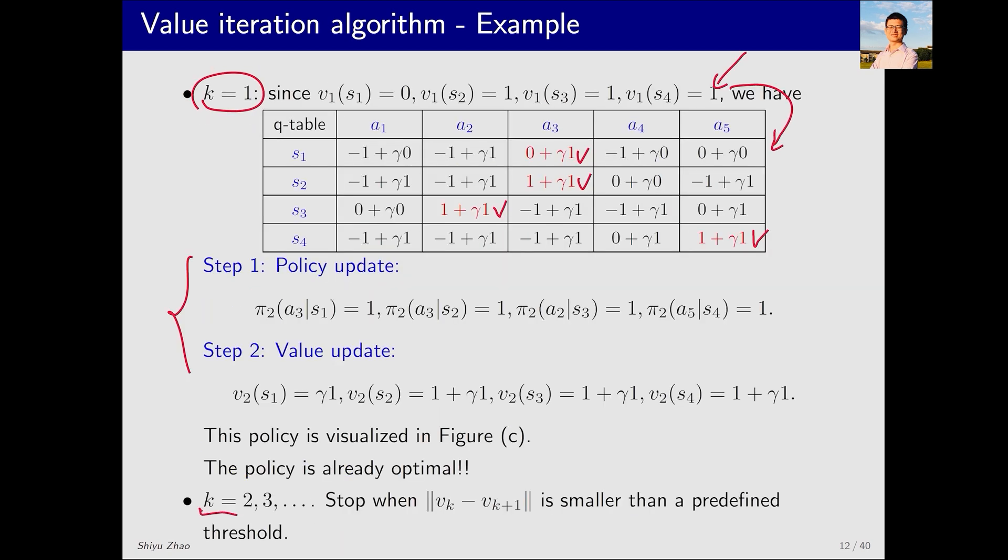Then, we could continue to iterate further. When do we stop? When the difference between v_k and v_k+1 is sufficiently small. This means that no matter how hard I try beyond this point, I won't be able to make significant changes. That's when we can stop.